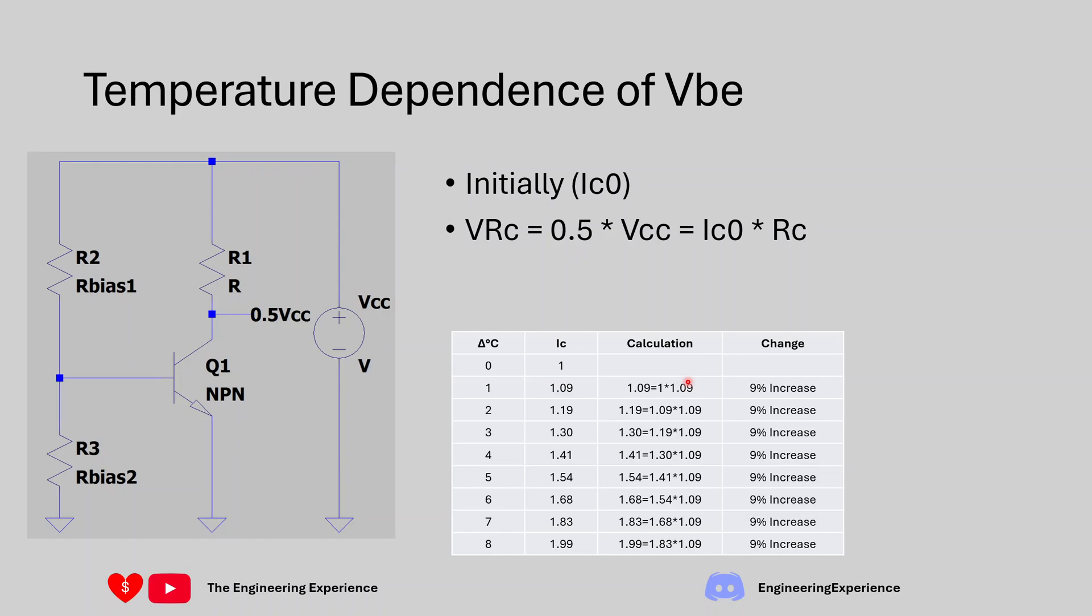Now we know from the book that the collector current changes by 9% or increases by 9% as you increase the temperature by 1 degree C. So multiplying 1 by 9% or 1.09 gives us 1.09 as the collector current. Now as you do that 8 times you basically end up with the value of IC as 1.99. So that's basically telling you that the collector current doubles for an 8 degree C temperature change. So you can see IC goes from 1 over here to 1.99 or approximately 2 with the 8 degrees of temperature change. So this is what we're going to use to answer the question.